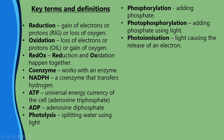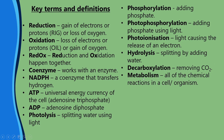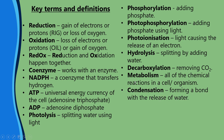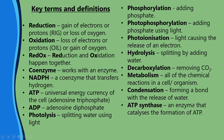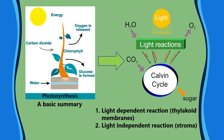Photo-ionization is where light causes the release of an electron. Hydrolysis is splitting by adding water. Decarboxylation means removing carbon dioxide. Metabolism is the sum total of all the chemical reactions in a cell or organism. Condensation is forming a bond with the release of water. ATP synthase is an enzyme that catalyzes the formation of ATP. Finally, a chloroplast is an organelle that contains chlorophyll and is the site of photosynthesis in plants.